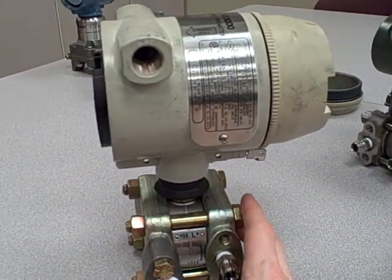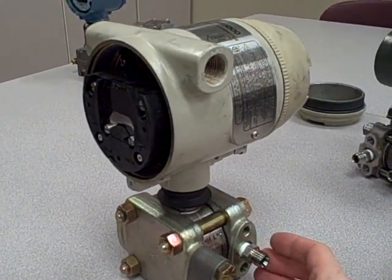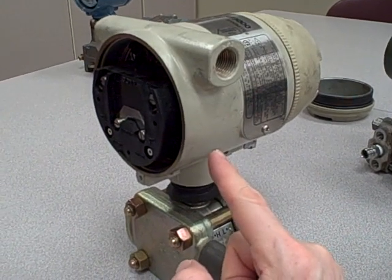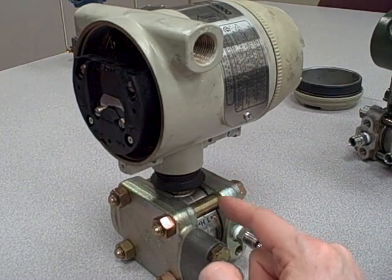Here we have a Honeywell Model ST3000 transmitter. It's considered a smart differential pressure transmitter, meaning it has digital electronics built inside to characterize properties of the sensing cell and to correct for non-linearities of that cell.